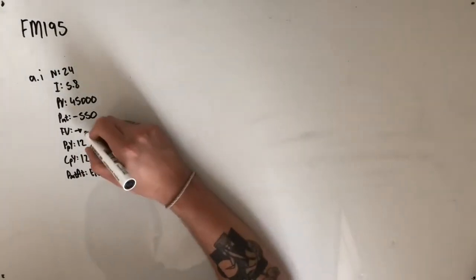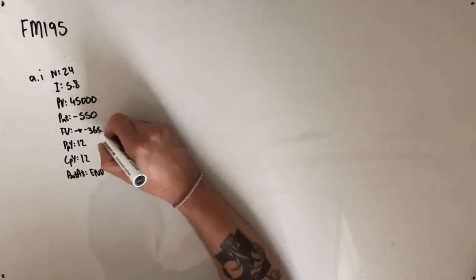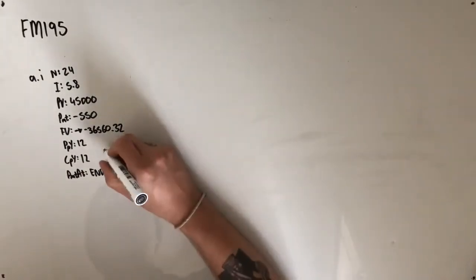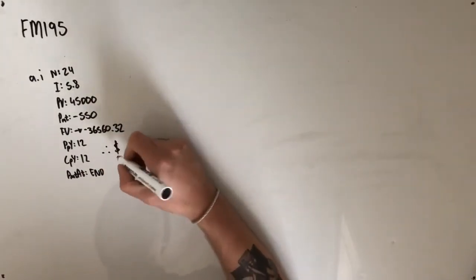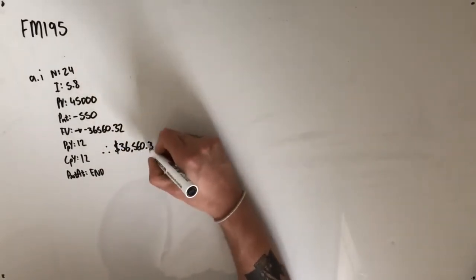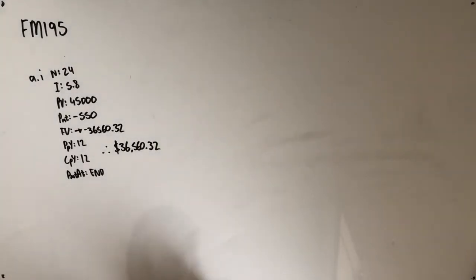Plugging this into your calculator should give you an answer of negative $36,560.32, which of course means the amount that he's still owing is $36,560.32. Excellent.